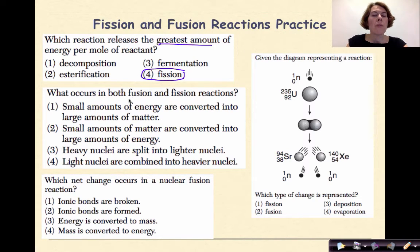What occurs in both fusion and fission reactions? Small amounts of energy are converted into large amounts of matter. Small amounts of matter are converted into large amounts of energy. Heavy nuclei are split into lighter nuclei. Light nuclei are combined into heavier nuclei. Okay, so number three is out. Heavy nuclei are split into lighter nuclei. That only goes with fission and not fusion. Same thing, light nuclei are combined into heavier nuclei. That's the definition of fusion. So three and four are out. What they both do is they convert small amounts of matter into large amounts of energy. So it's all about M-E. Matter into energy. That's one way to keep it straight.